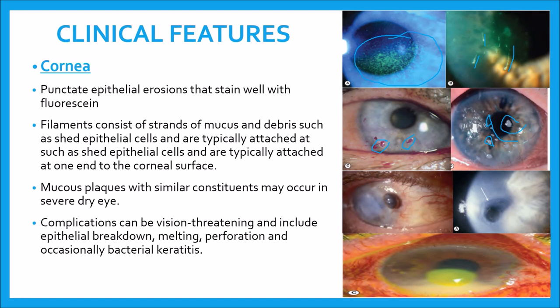Complications can be vision threatening and include epithelial breakdown and corneal melting. The epithelial breakdown is shown here, and corneal melting is then plugged by iris tissue. This usually happens in cases of perforation and occasionally bacterial keratitis, as seen in this picture — you can see the hyperemia, hypopyon, and keratitis staining with fluorescein.